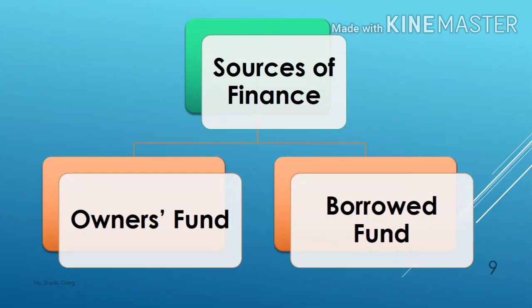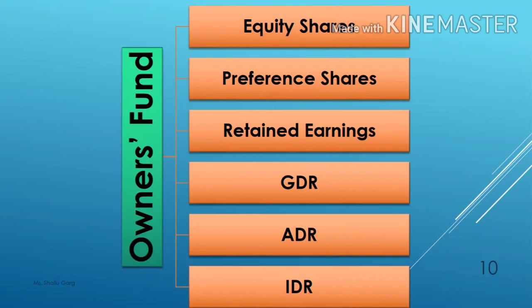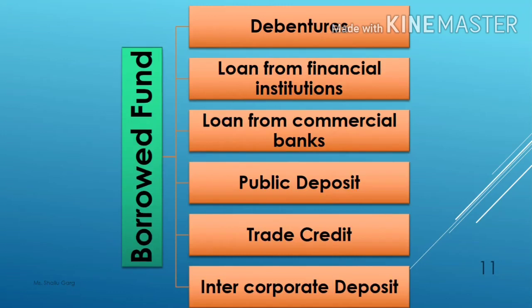On the basis of ownership, there are two sources of finance: one is owners fund and the second is borrowed fund. Under owners fund, we will study about equity shares, preference shares, retained earnings, GDR, ADR, and IDR. Similarly, under borrowed fund, we will study about debentures, loan from financial institutions, loan from commercial banks, public deposit, trade credit, and inter-corporate deposit.